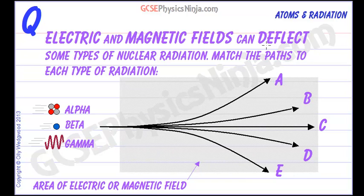Electric and magnetic fields can deflect some types of nuclear radiation. So here we have alpha, beta and gamma, and they are going to be going through an area of electric or magnetic field and we have to show which directions, if any, they will be deflected.